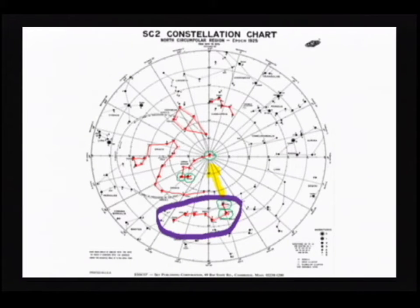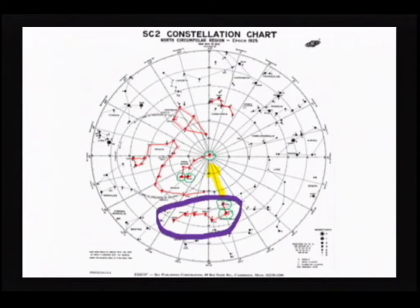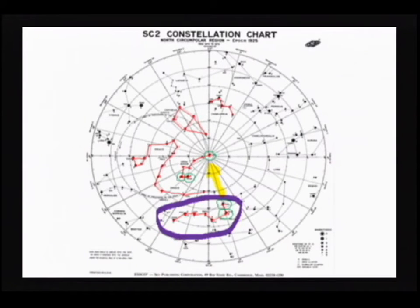Those two stars are the ones you most commonly see. The stars in between, circled in green for the Little Dipper, are really very hard to see. Generally you see Polaris pretty well and those other two stars in the Dipper part of the Little Dipper. Unless you've got incredibly dark skies, you're going to lose the middle of the Little Dipper.